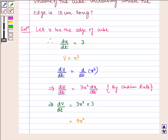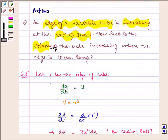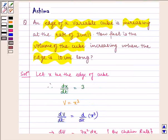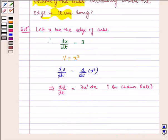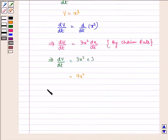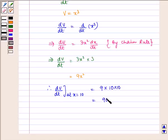Now we have to find the rate when edge is 10 cm long. Therefore, dV/dt at x = 10 equals 9 × 10 × 10, which is equal to 900 cm³/s.